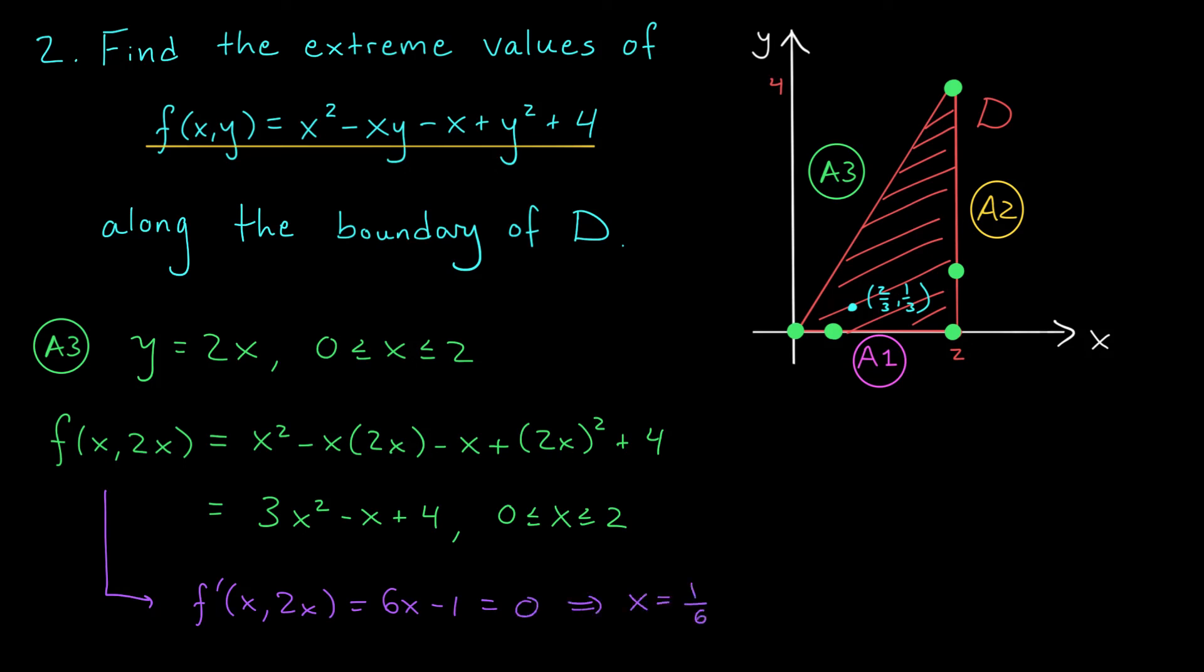We know that y is going to be 2x, right? So, if x is 1/6, y is 1/3. We also throw in the endpoints, x is 0 or 2. This gives us 3 points, (0,0), (1/6, 1/3), and (2,4).